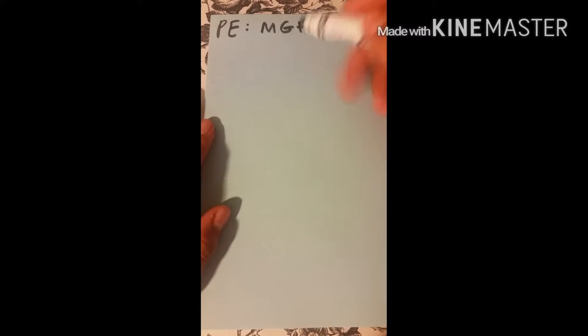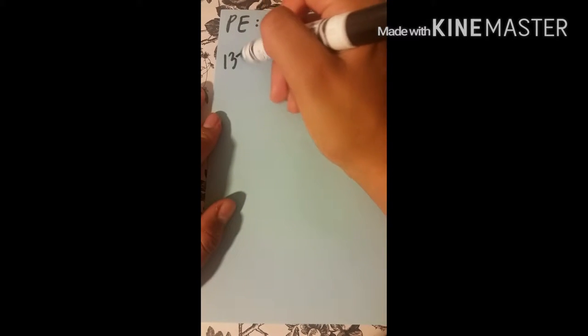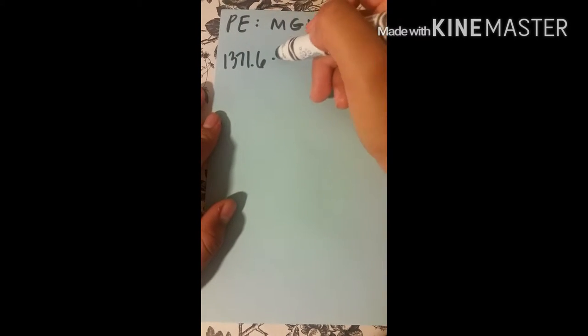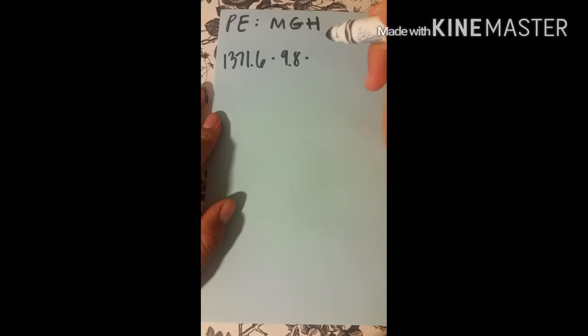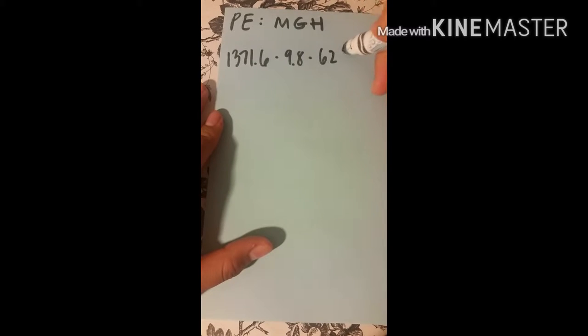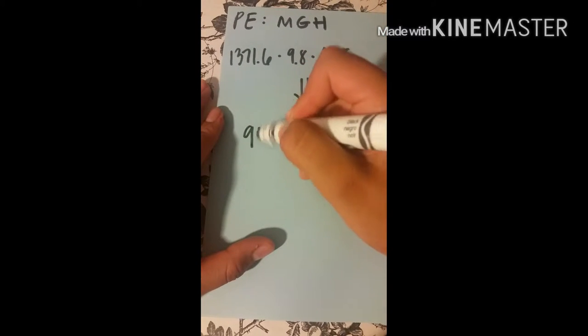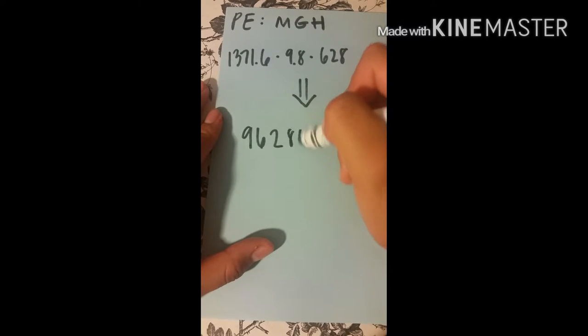Our potential energy, it is mass times gravity times height. And that is 1371.6 times gravity times the height of our roller coaster. And this will give us this number right here.